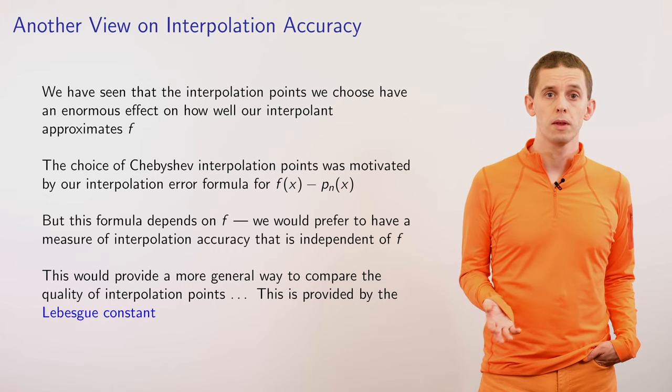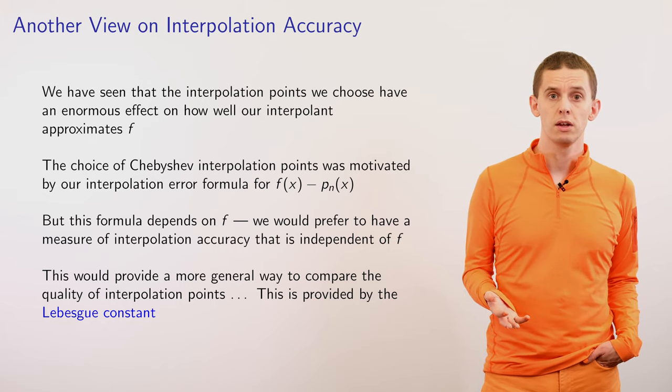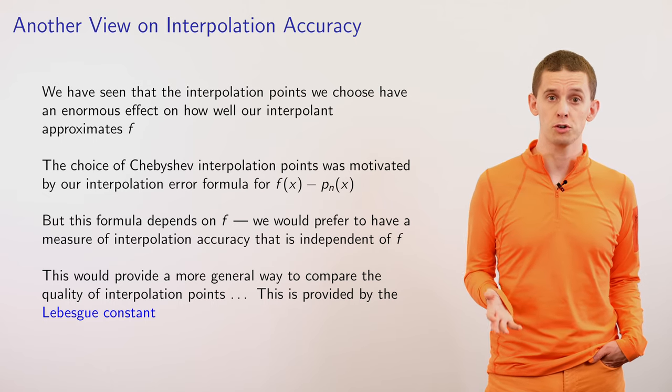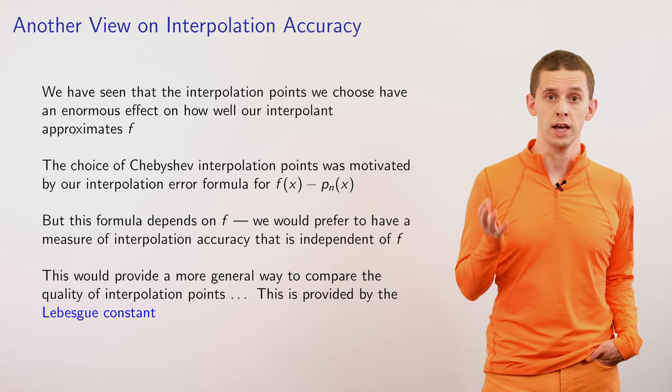Hi, welcome to Harvard Applied Math 205, a graduate course in Scientific Computing and Numerical Methods. I'm Chris Rycroft, and in this video we'll look at how to compare different polynomial approximation schemes to continuous functions. We'll introduce the idea of the Lebesgue constant, which is a quantitative way that we can compare one polynomial interpolation scheme to another. In the previous video we've seen that our choice of interpolation points can have a huge effect on the accuracy of our polynomial approximation Pn to our continuous function f.